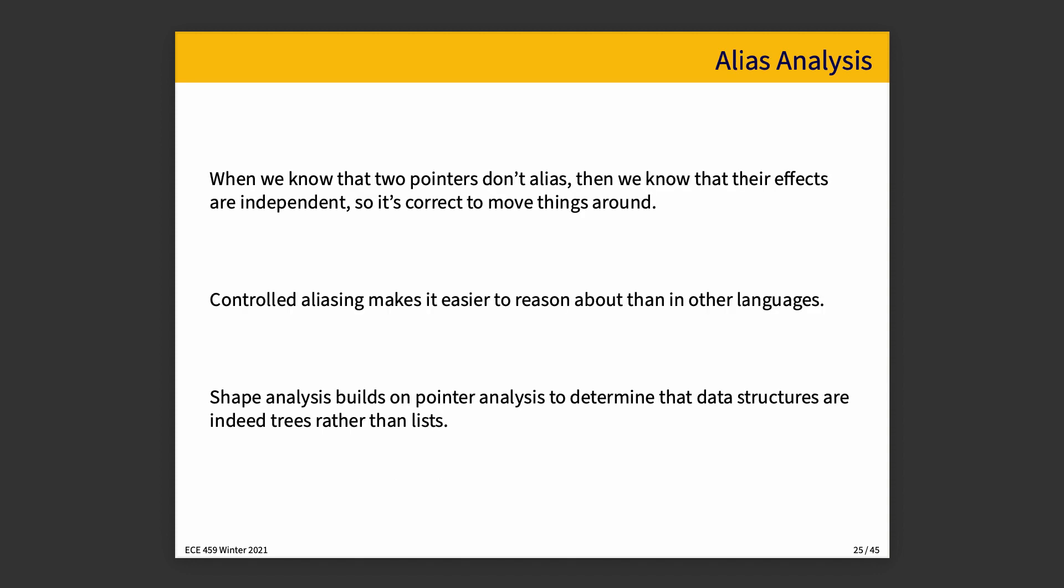So one of the things that alias analysis is useful for is that if we know the two pointers don't alias, then we know that their effects are independent. So it's OK to move things around. If in the previous example that we saw of combining loops a and b where we're going to iterate over a and assign a at index i equals four and assign b at index i equals seven. If you know that a and b don't overlap,